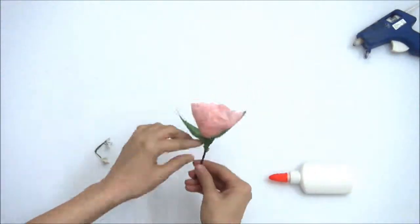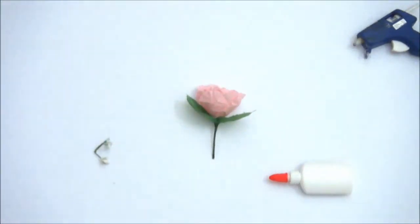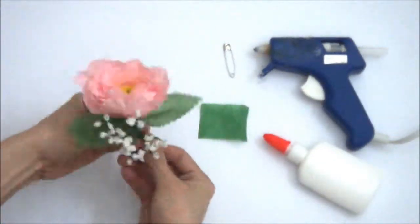Once you've done the flower you can put the leaves. Here are our rose leaves because this is a boutonniere so it's kind of small.